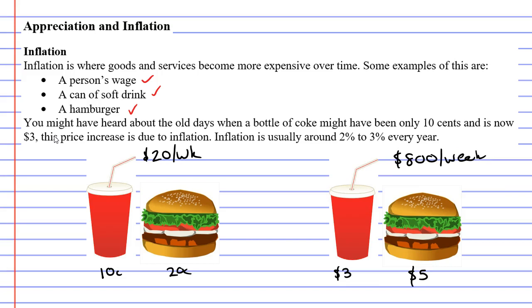Now the rate of inflation is usually about 2-3% every year. So every year, everything becomes about 2-3% more expensive.